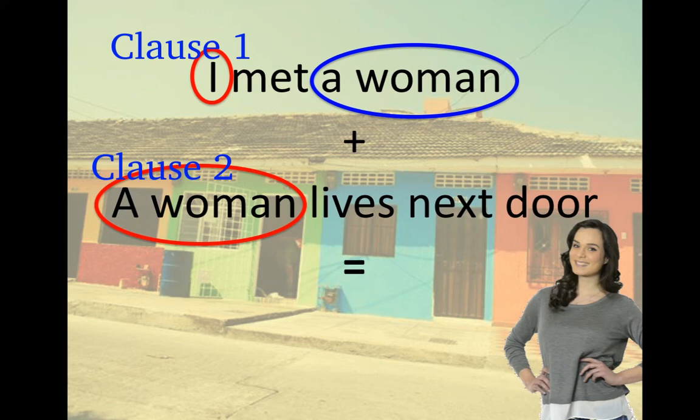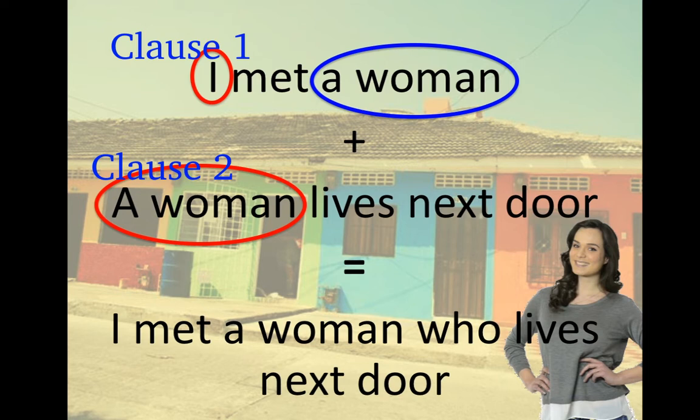Where does the woman live? She lives next door. So what do you think the result will be if we connect those two sentences using a relative pronoun? Well, this is the result: 'I met a woman who lives next door.' I used a relative pronoun to replace the noun that is repeated in the two clauses.